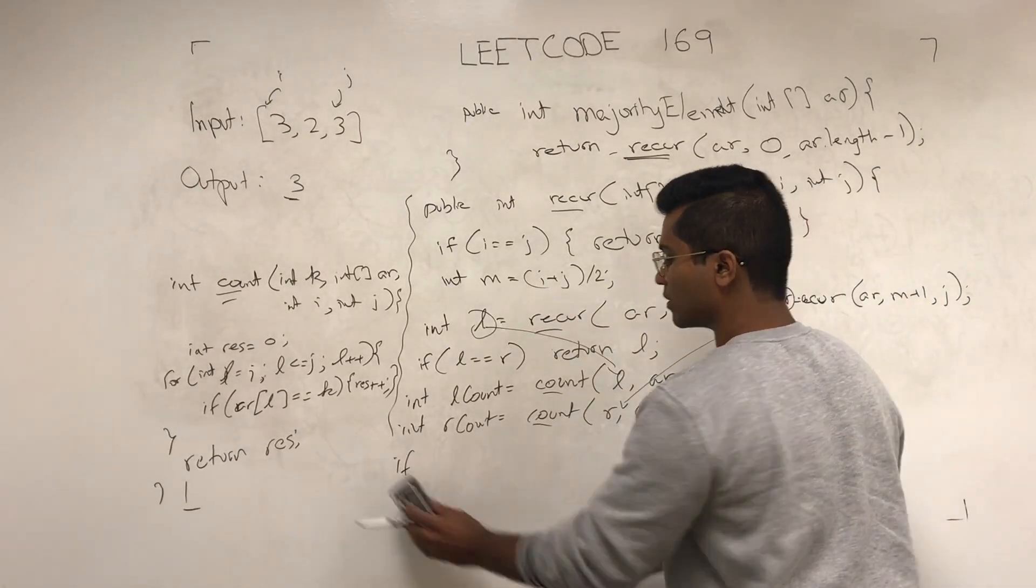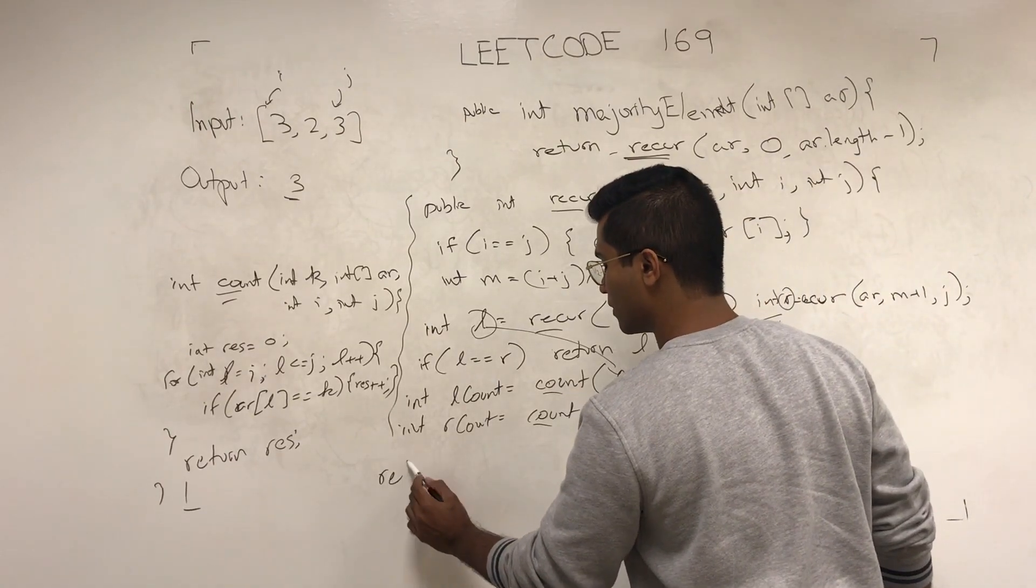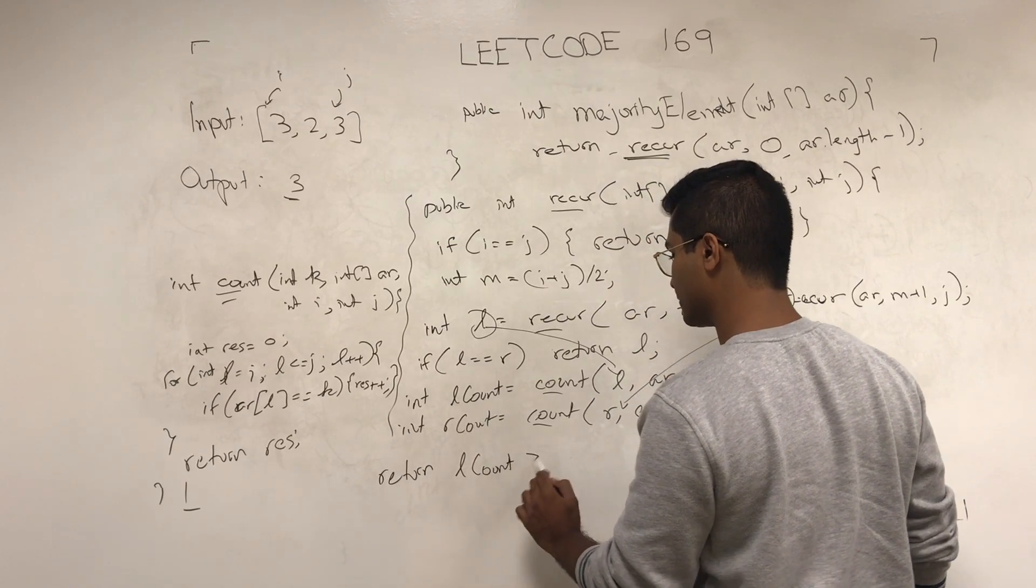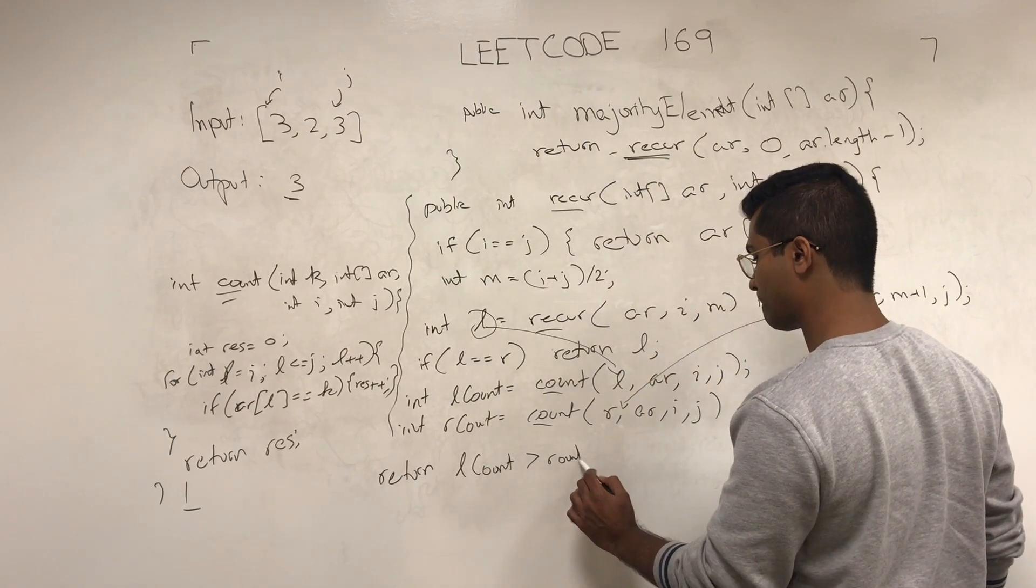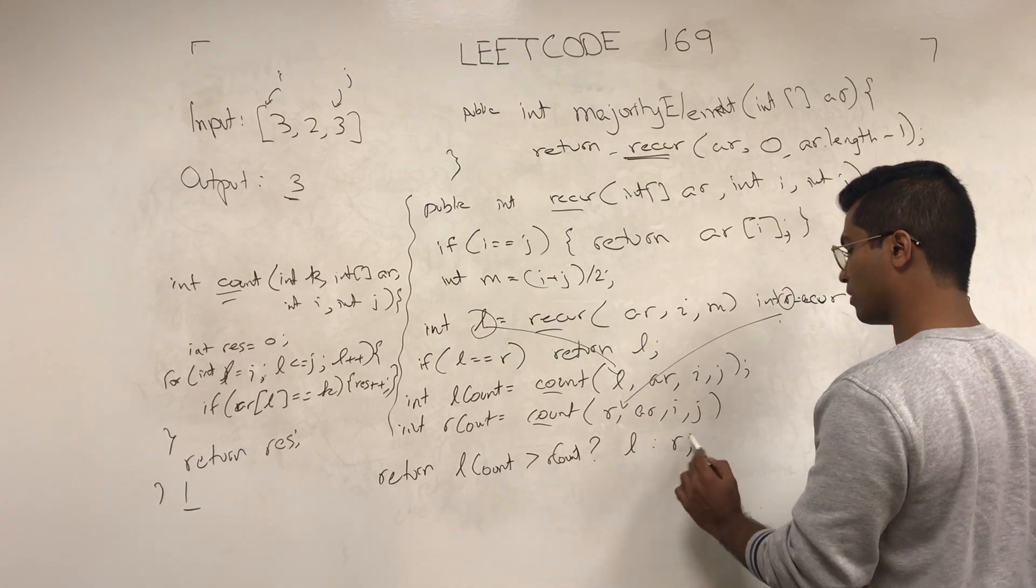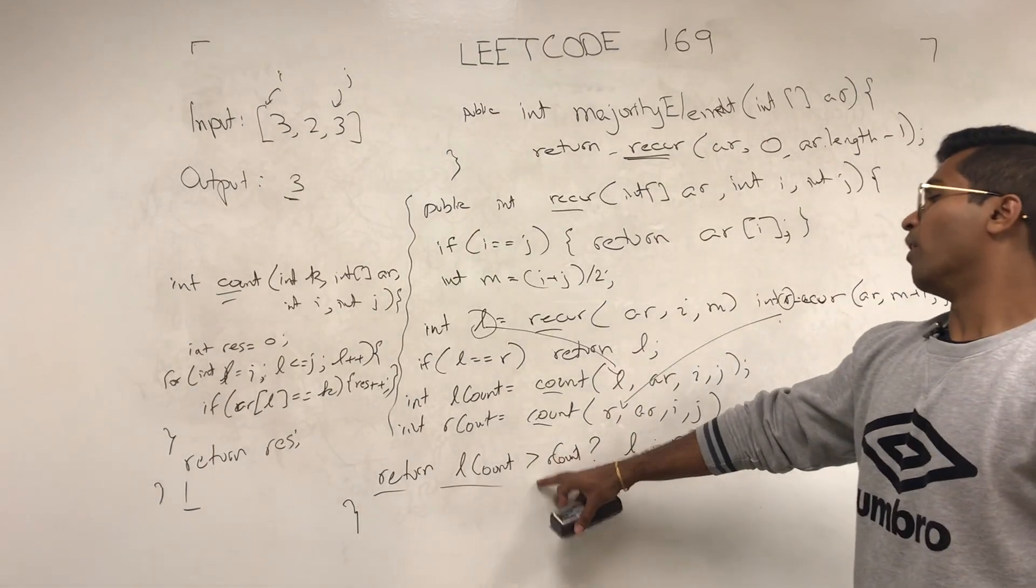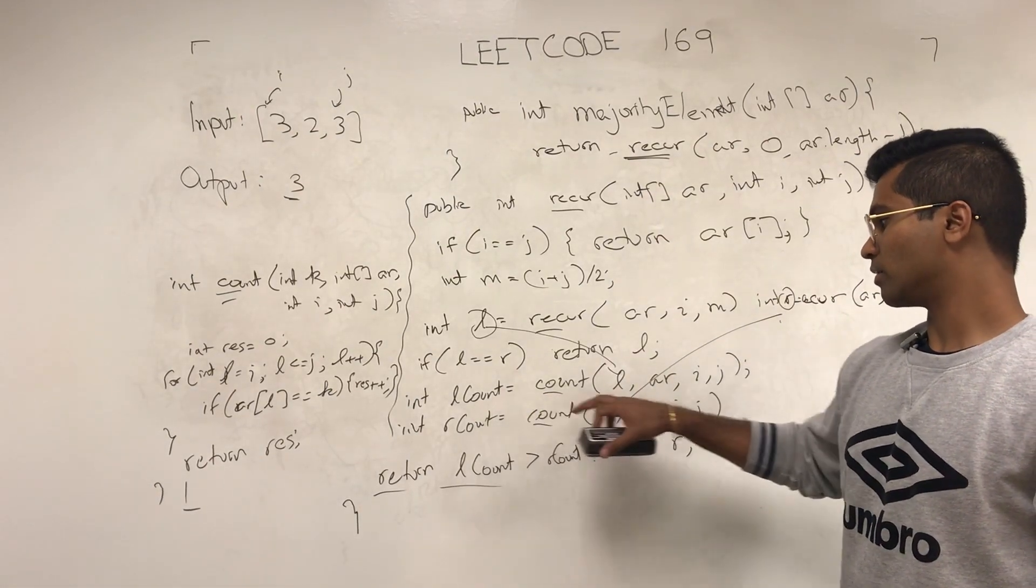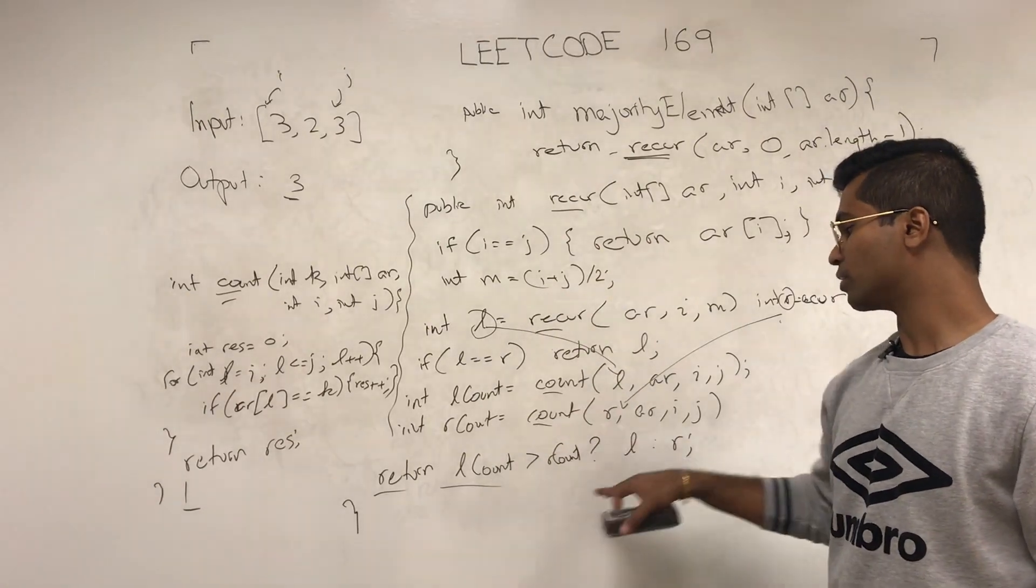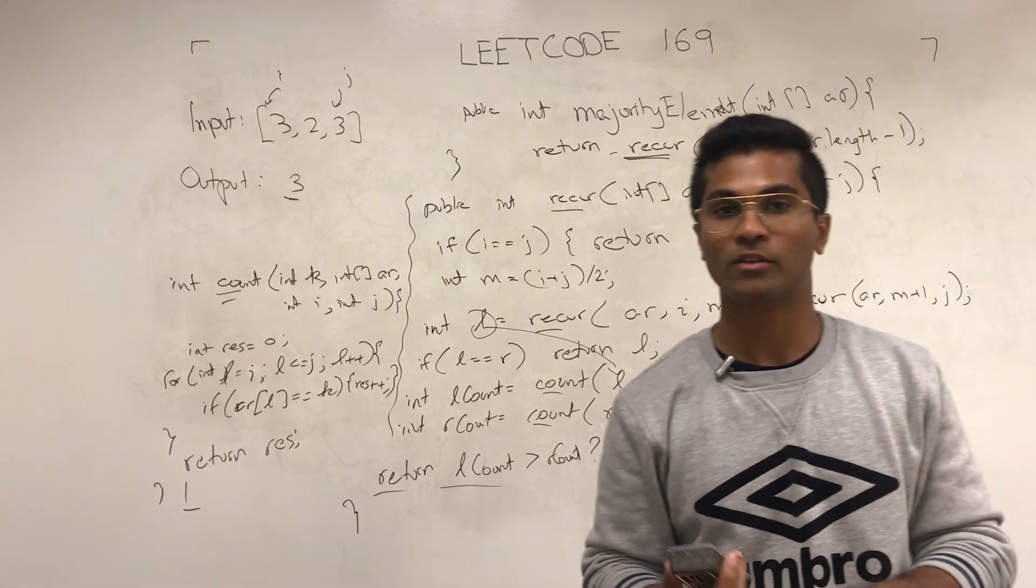Okay, so that's pretty much it, we're almost done. We're going to return lcount is greater than rcount, then return l, else return r. Now what this final line means is that, are there more numbers, is l occurring more times than r? If so, return l, else return r. And that's pretty much how you solve this one.